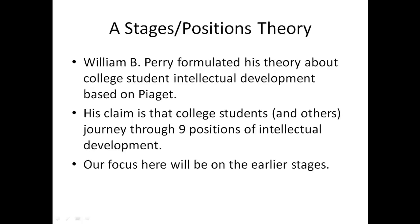Perry's theory is a stages or positions theory. He formulated it based on some of the work done by Jean Piaget. Perry's particular interest was in college student intellectual, ethical, and moral development. His theory claims that college students make a journey through nine different positions of intellectual development. I'm only going to focus on the first four big categories, drawing from a melding of different perspectives, with sources cited at the last slide.